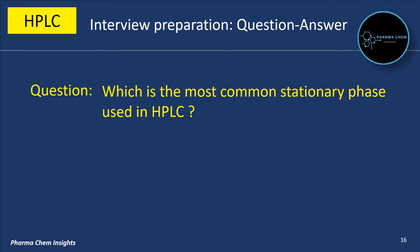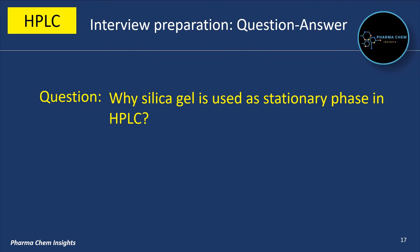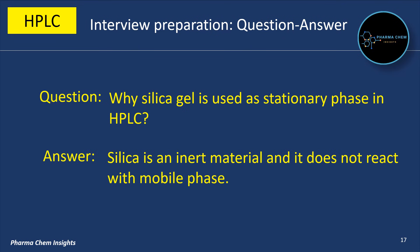Which is the most common stationary phase used in HPLC? Silica gel is the most common stationary phase used in HPLC. Why is silica gel used as a stationary phase? Silica is an inert material and it does not react with the mobile phase.